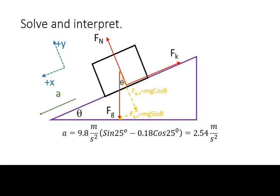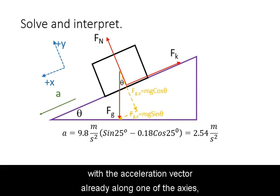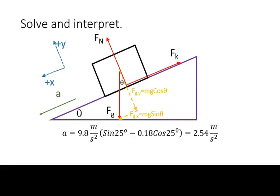Note that because we set up our coordinate system with the acceleration vector already along one of the axes, the acceleration along that axis is going to be our total acceleration.